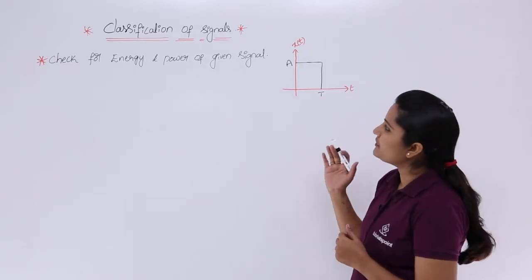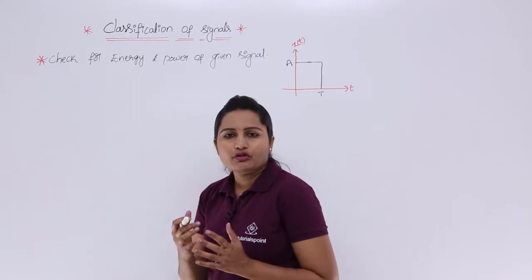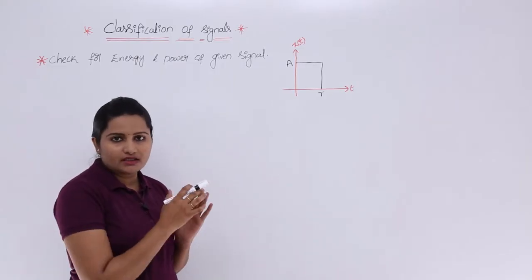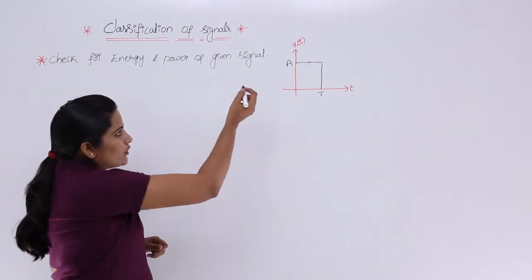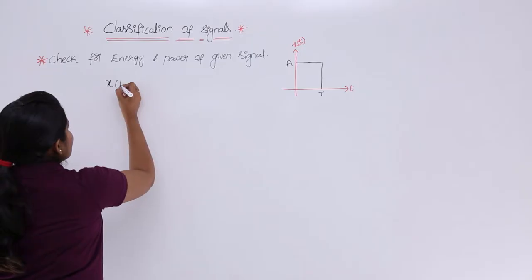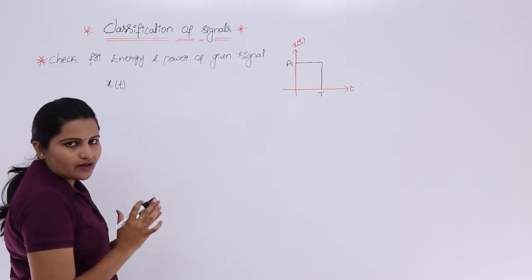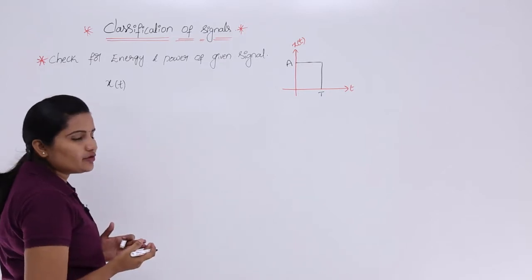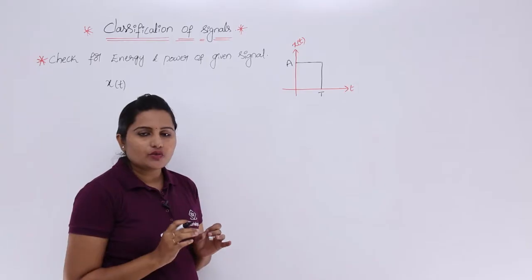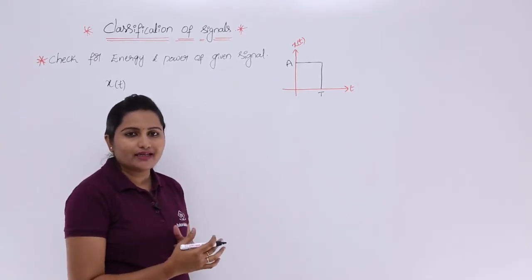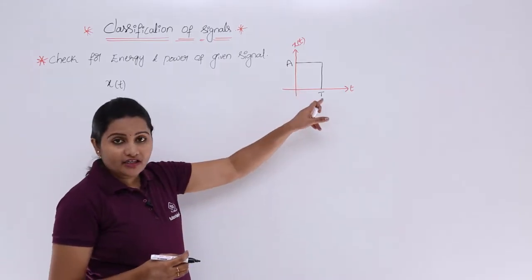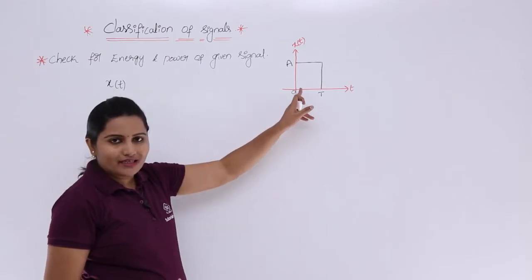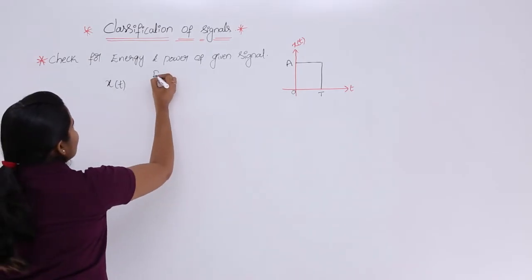They have given: check for energy and power of a given signal. This is the given signal in pictorial representation — the image of the signal is given. First we need to define the signal, then only we can represent that definition in the equation of energy or power. Now I am going to define the signal x(t). First of all, x(t) — whatever points you observe about x(t) I am going to note here. That is a finite duration signal: you can observe the signal is only from 0 to T, not up to infinity. This signal is given from 0 to T. So x(t) is a finite duration signal.